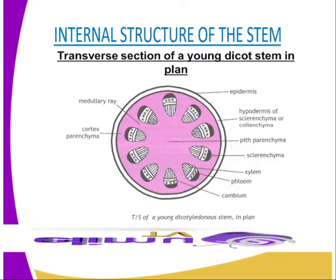Starting with the collenchyma: the collenchyma is a tissue which lies beneath the epidermis. It may form a complete cylinder or it may occur in separate strands. From a longitudinal view, the collenchyma cells are elongated and have oblique ends. The walls are thickened at the corners with cellulose and pectin deposits. Due to this thickening, collenchyma serves as a strengthening tissue.